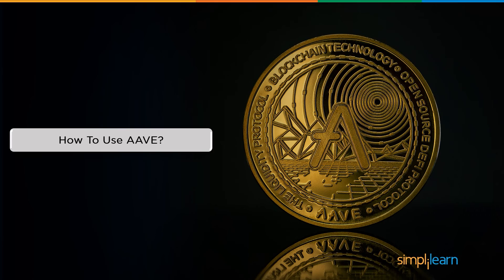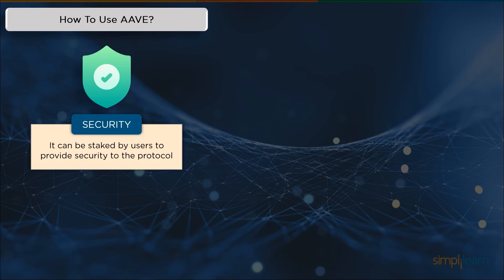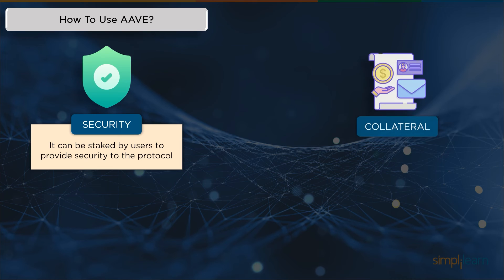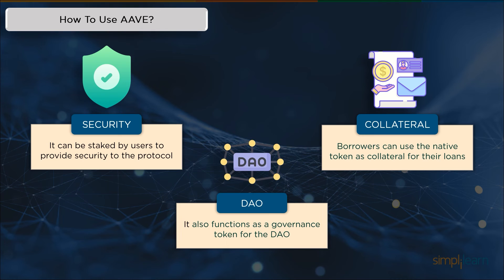Let me take you through some of the real-life uses of Aave. First is security: users can stake the Aave ERC20 token to help secure the system and receive compensation in return. Second is collateral: borrowers who pledge the native token as security for their loans are required to pay lower costs than those who utilize other cryptocurrencies locked within the platform. And the third one is DAO: Aave serves as the DAO's governance token and can be used to cast votes on proposals about the addition of tokens to the protocol, platform functionality, and other uses.